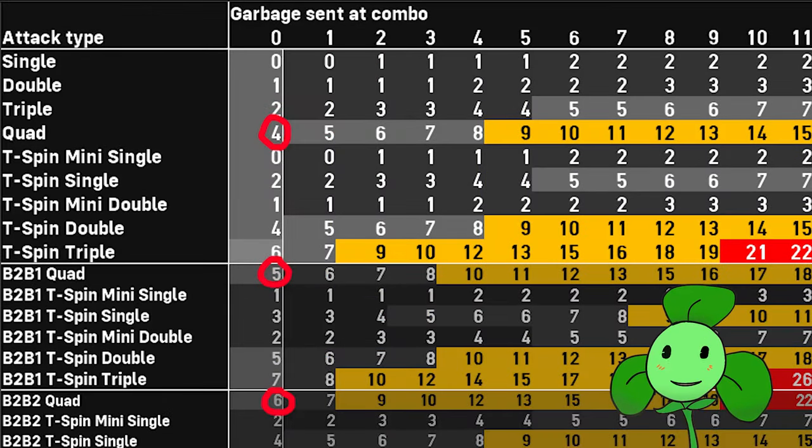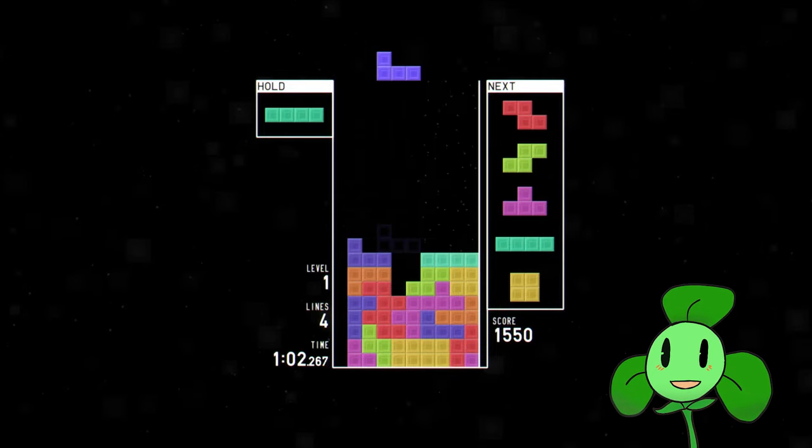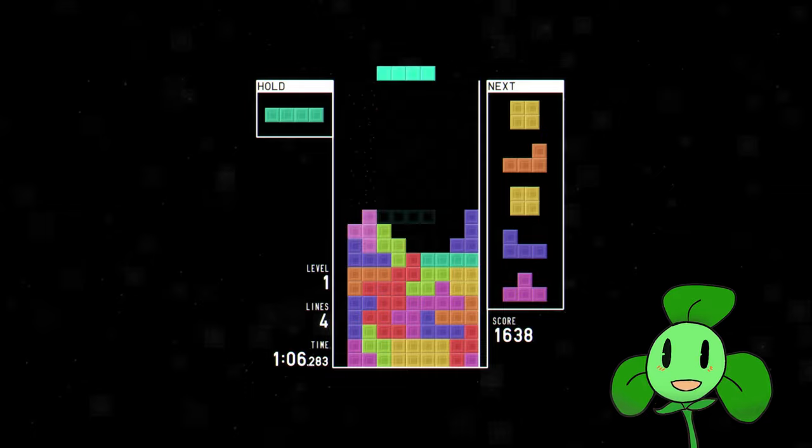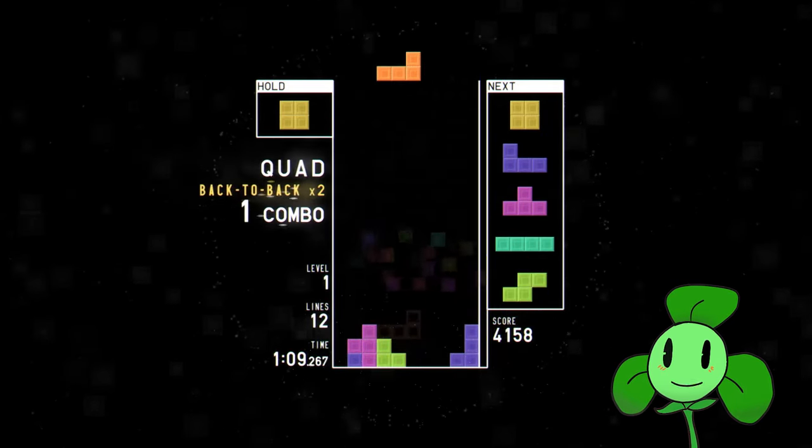A Tetris will send four lines of garbage to your opponent, and more later on. So when you're starting out, you want to keep this pattern of stacking up on one side and putting your I-pieces on the other. If you continue this, then you will send lots of garbage to your opponent.